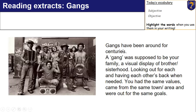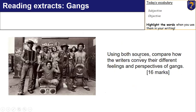Gangs have been around for centuries, but obviously the way they are viewed has very much differed over time. It's supposed to be your family, a visual display of brotherhood, looking out for each other. But ultimately what we're going to see in these two extracts is that there are different viewpoints about gangs. Here is your question: using both sources, compare how the writers convey their different feelings and perspectives of gangs. Crucially, you need to find the methods, subject terminology, and language techniques that show those ideas.